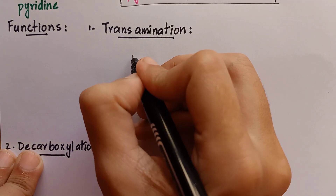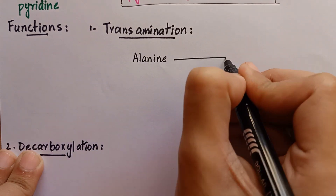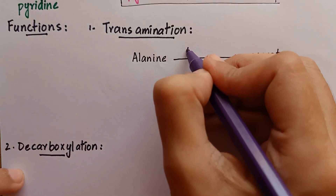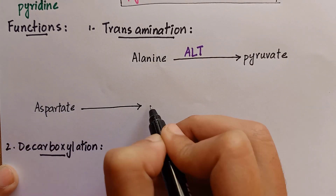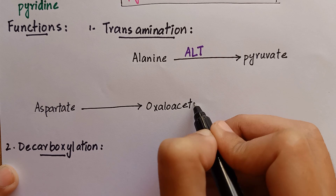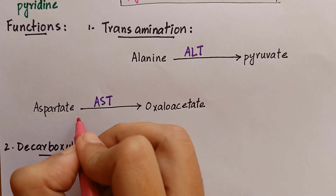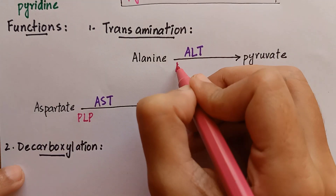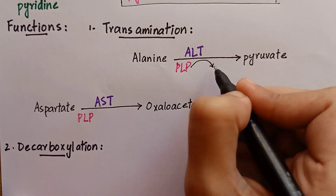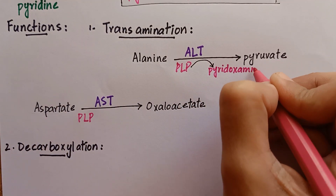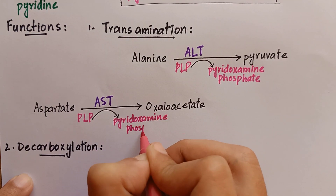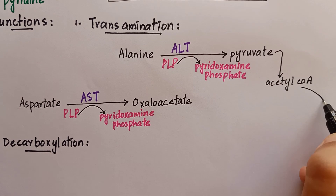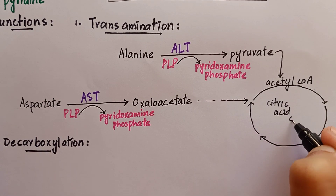During transamination, amino acids get converted to keto acids — for example, alanine is converted to pyruvate by the enzyme alanine transaminase, and aspartate is converted to oxaloacetate by the enzyme aspartate transaminase. In both of these reactions, pyridoxal phosphate acts as a coenzyme, accepting an amino group to form pyridoxamine phosphate.